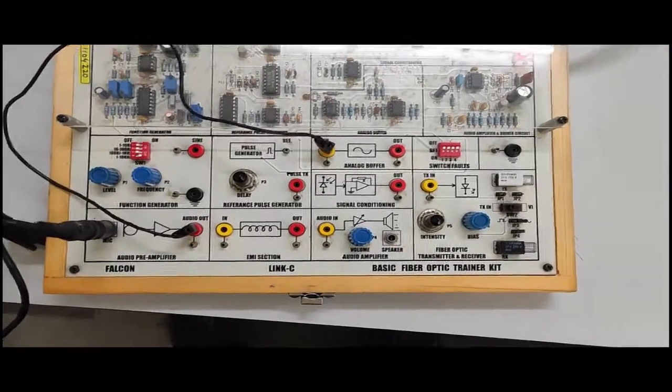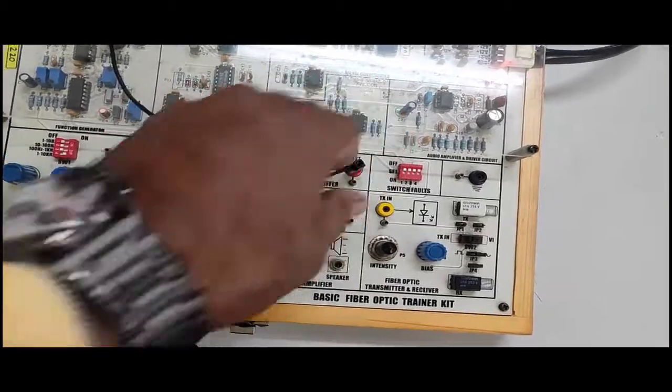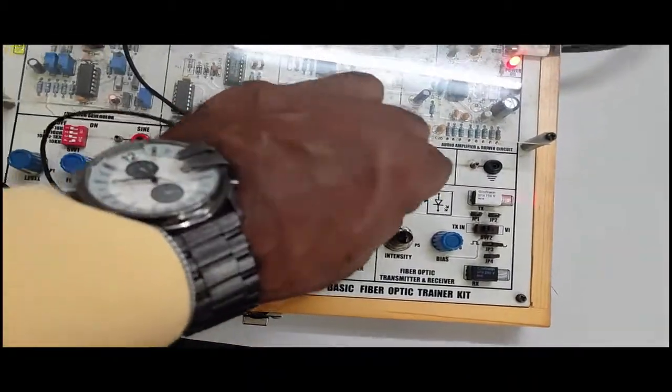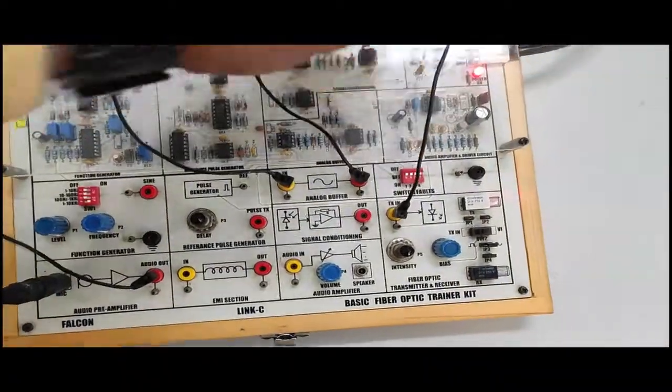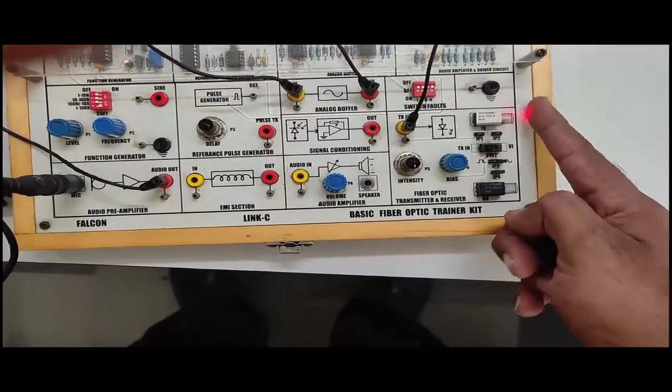Then the output of this analog buffer will be given to the input of the LED, which will convert the electrical signal into light. You can see as I have connected my output of analog buffer to the input of LED, the light is coming out from the LED.